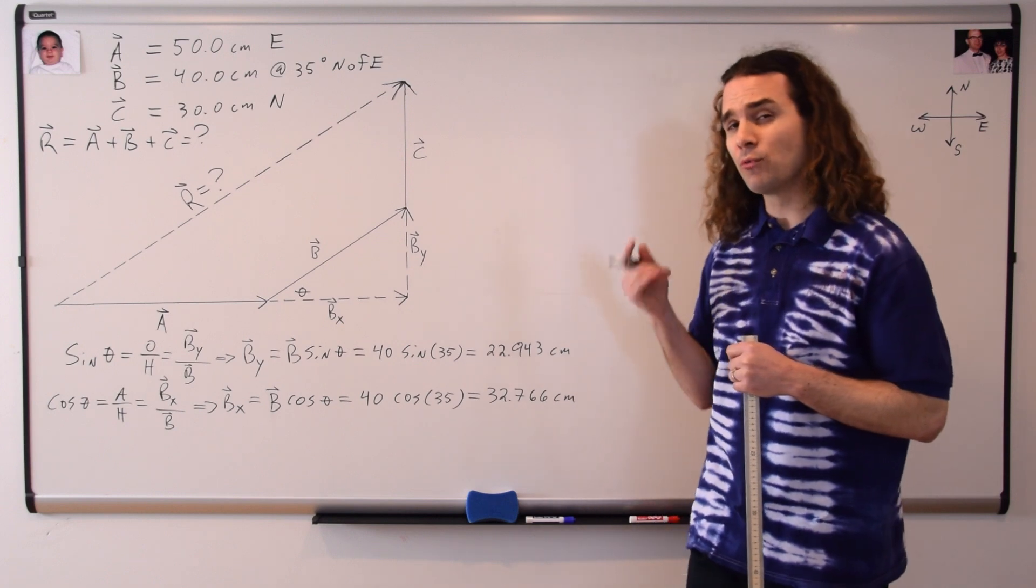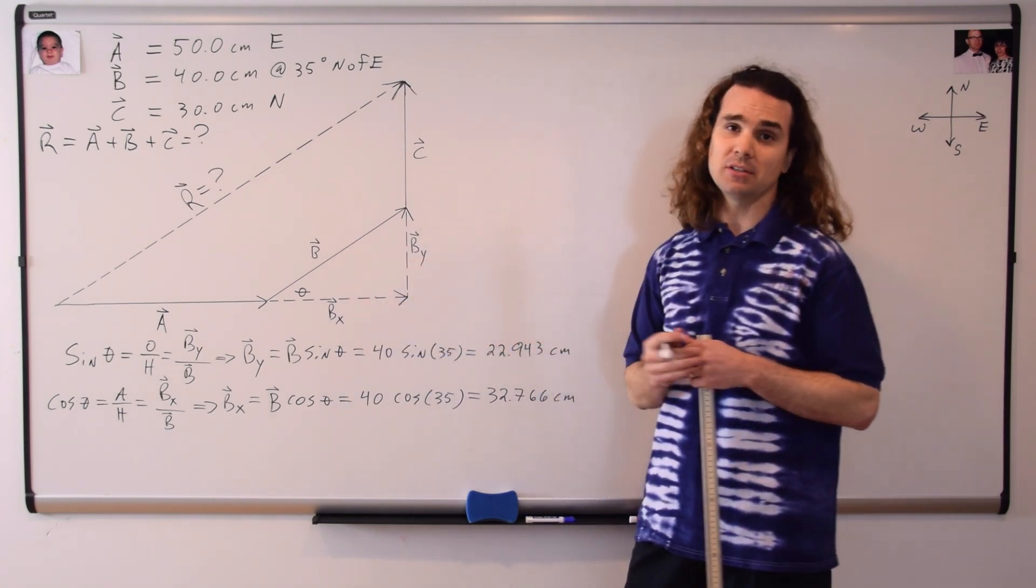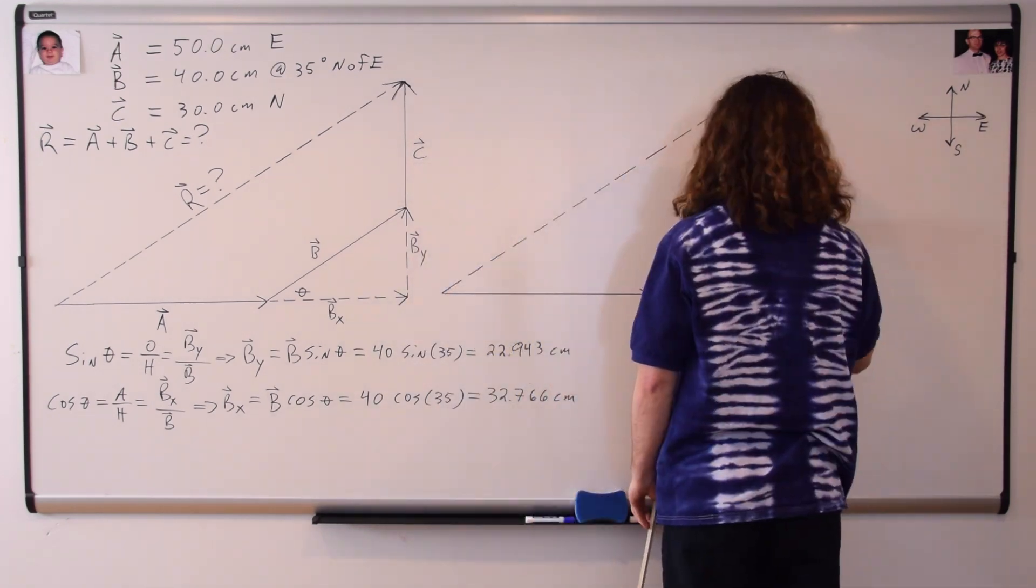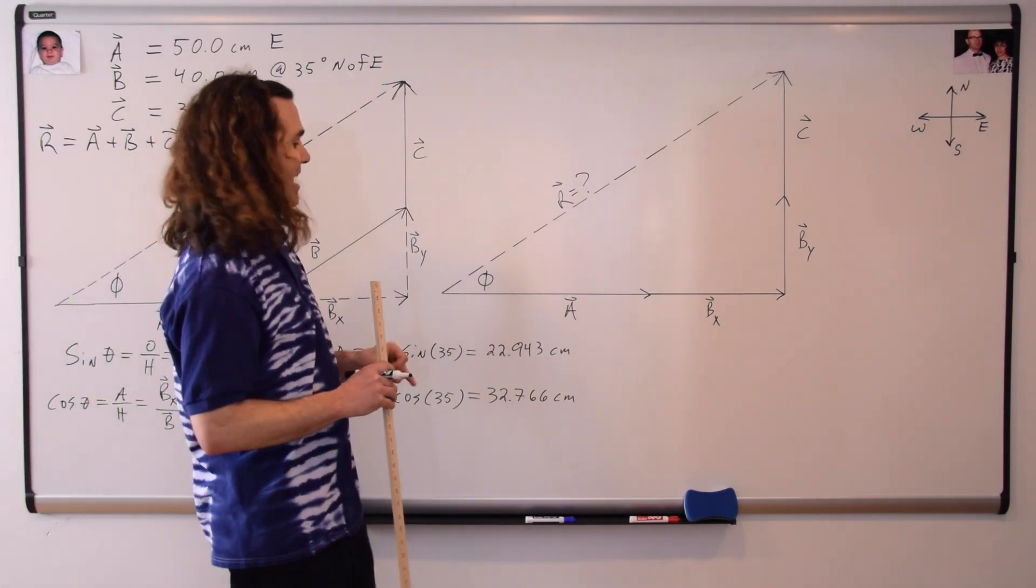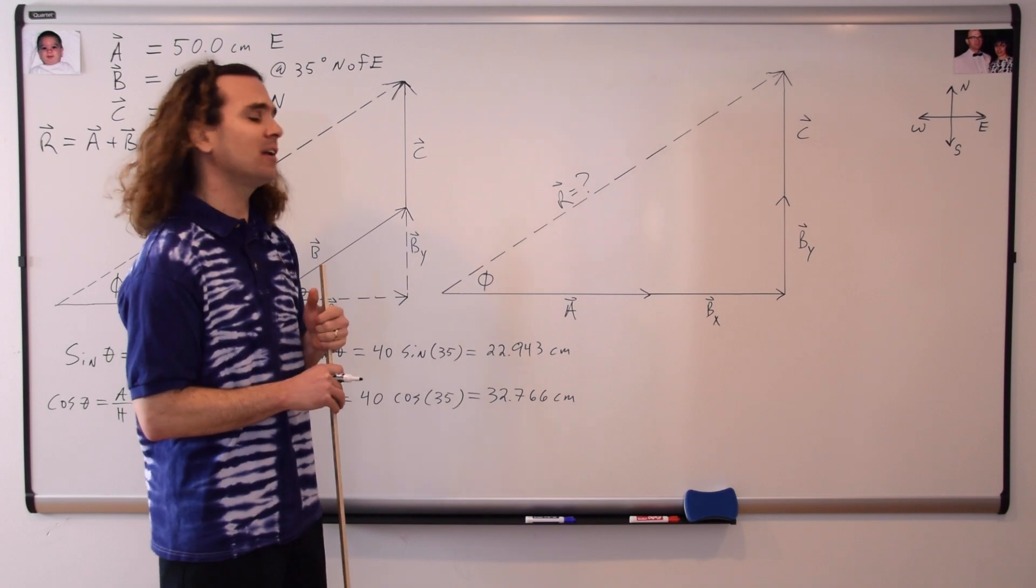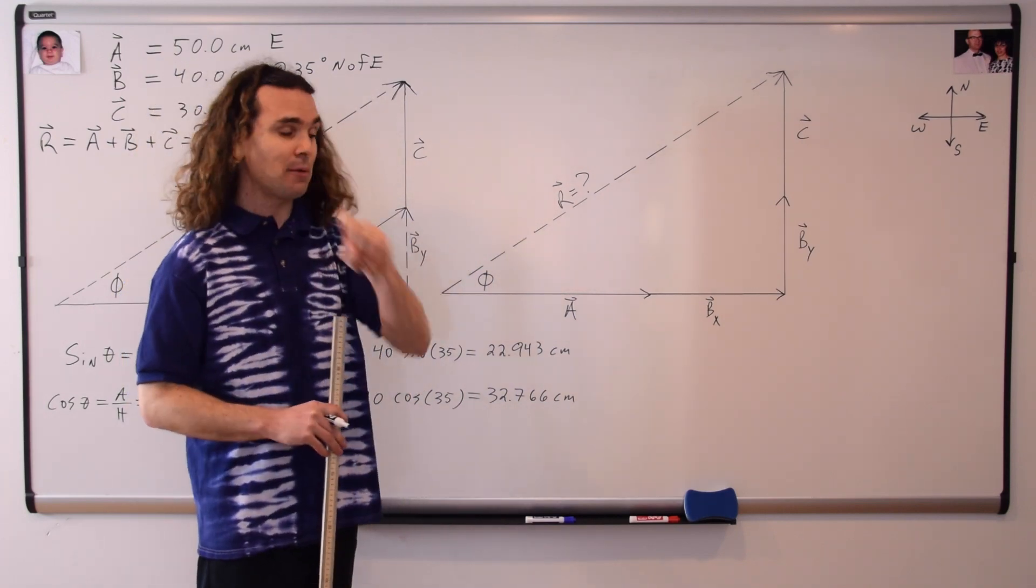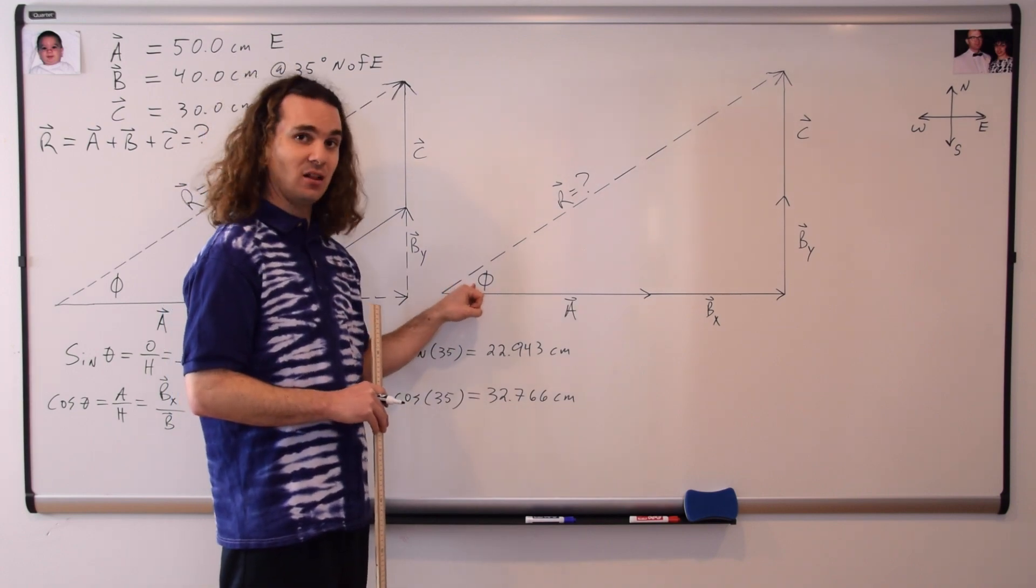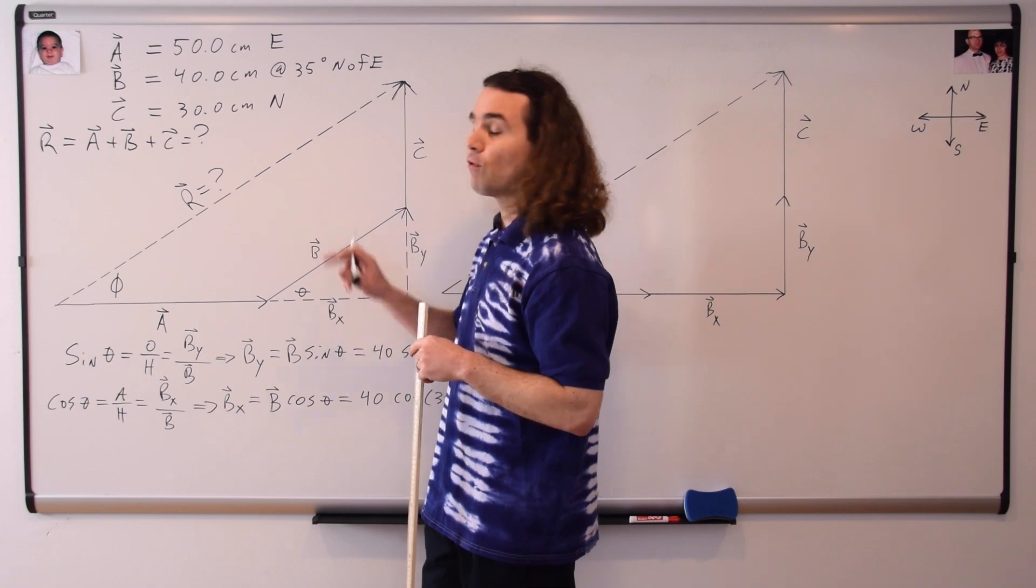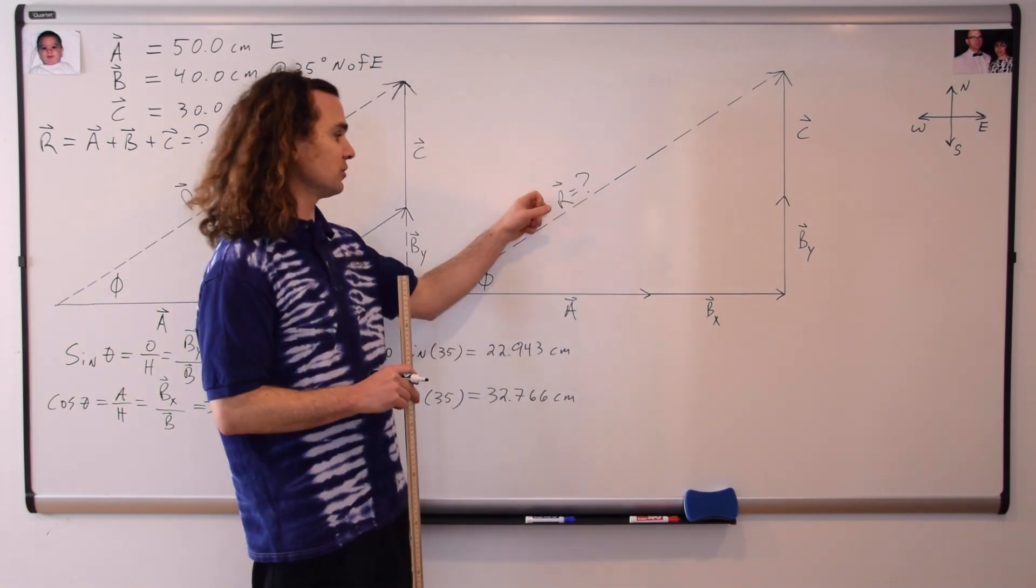Now notice what happens when we redraw our vector diagram, and instead of using vector B, we draw in the components of vector B. Now we have a right triangle, and we can use SOHCAHTOA and the Pythagorean theorem to determine our resultant vector. Now please notice that I've labeled this angle as phi, this angle right here is phi, which is different than our angle theta for our vector B, because this is the angle for the direction of our resultant vector.